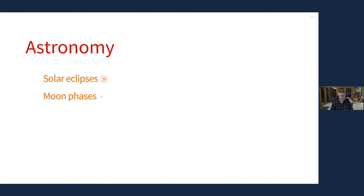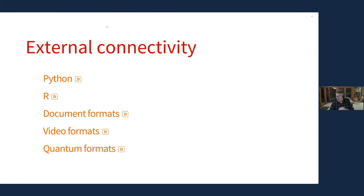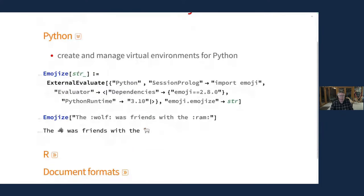Stepping away from the fun computational stuff, external connectivity and system integration is always still a core part, particularly if you're building applications around Wolfram Language. The first story is Python — we've had for some time the ability to do external evaluation of Python code, and here I've got a library called Emoji.